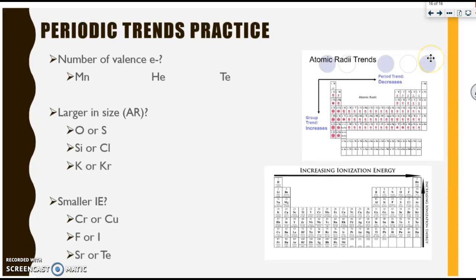This is the last slide for this particular topic. What I would like you to do is pause the video and attempt to answer these questions. Mn is a transition metal, so it has two valence electrons. Te is in group 6A, so it has six. Helium is unique because it is in group 8A, but it only has a total of two valence electrons. We'll cover that more later on. For size, when you travel down the table you increase, when you go across the table you decrease, and then for ionization energy it is the opposite.